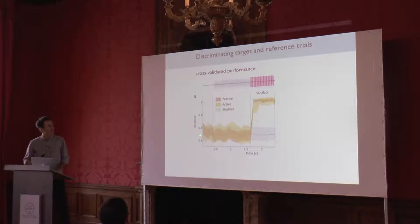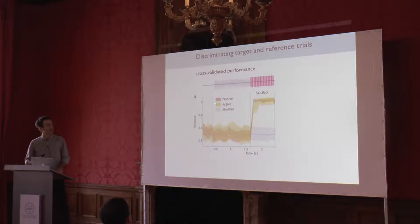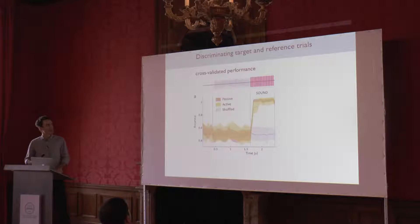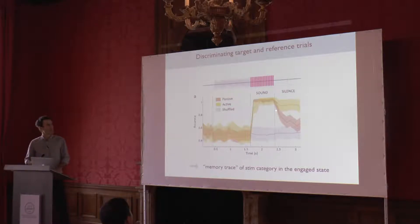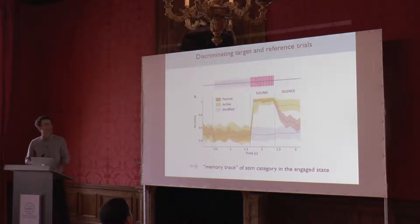Going back to the cartoon, we know the two stimuli elicit different responses across the population, but if you average across the population you don't see the difference. So what we set out to do is find the relevant axis in this space that best discriminates the two responses. For this we used a linear classifier, which we basically trained on single trial data — trained on half of the trials and tested on the other half — and what we get out is the performance, which tells us how well we can discriminate the two stimuli based on neural activity. This is a very simple classifier: it gives a different weight to every neuron, sums and thresholds — very similar to what an upstream neuron would be doing.